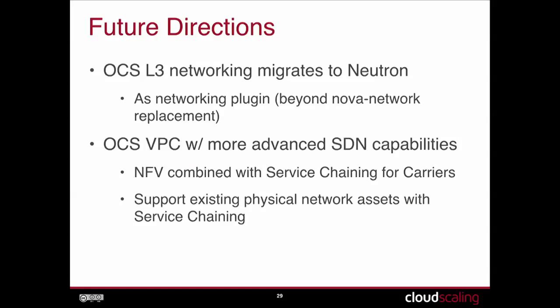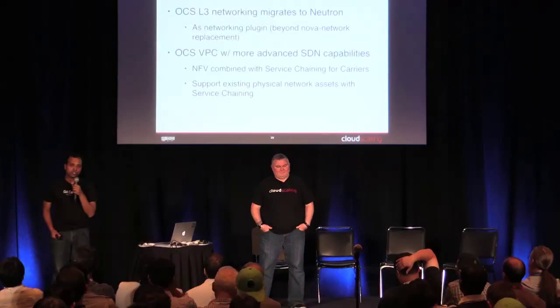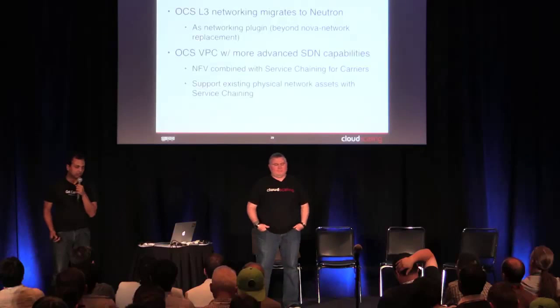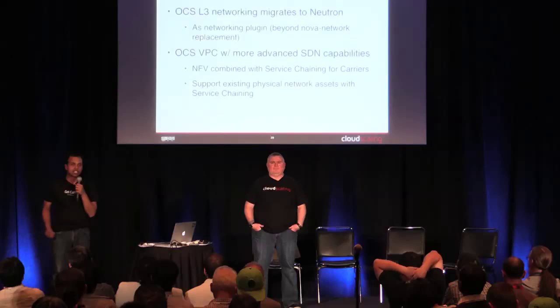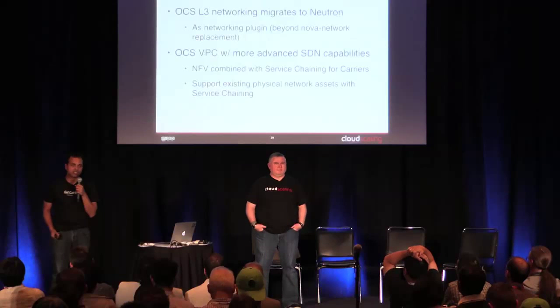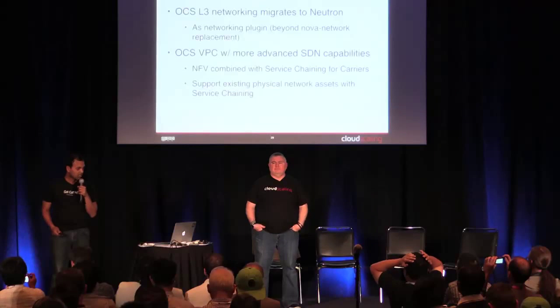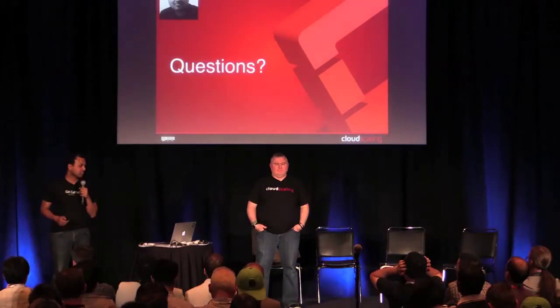Future directions: we know we'll probably need to move to Neutron at some point when Nova Network is fully deprecated, though we don't know exactly when. We are looking forward to adding more SDN capabilities using OpenContrail to the OCS product. We're most interested in the service chaining feature, which allows you to place arbitrary services in the network — very useful for NFV-type services for service carriers.